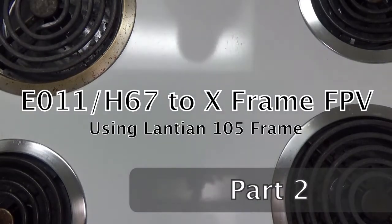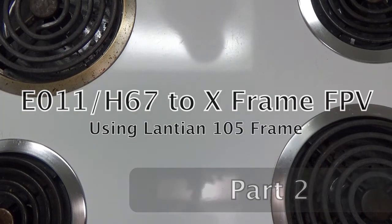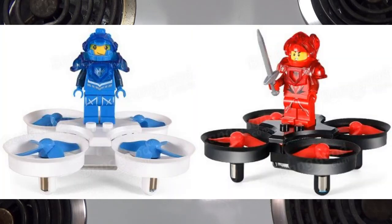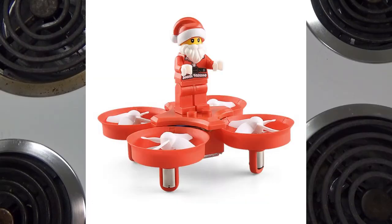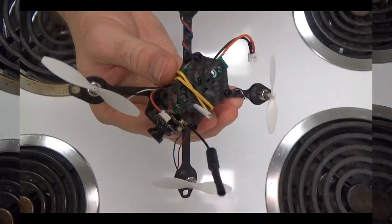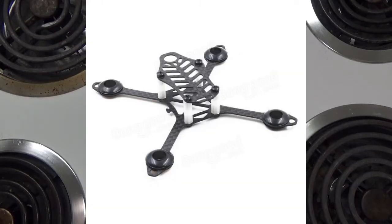Hello and welcome to part two of the two-part tutorial on how to take an EACHINE E011 or a JJRC H67 ducted quadcopter and convert it to an outdoor flyer by putting it onto a carbon fiber X-frame, in this case the Langean 105.